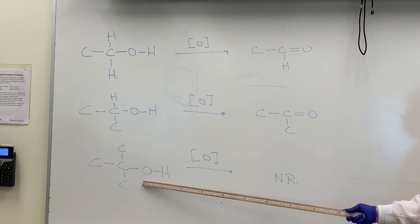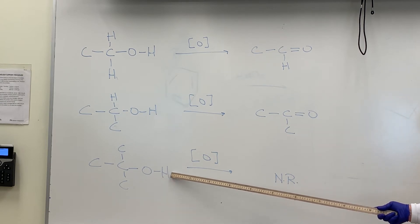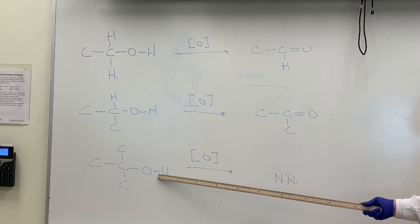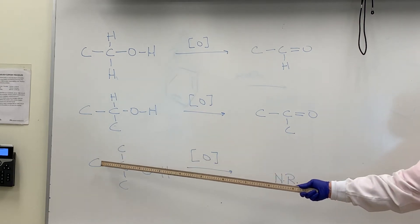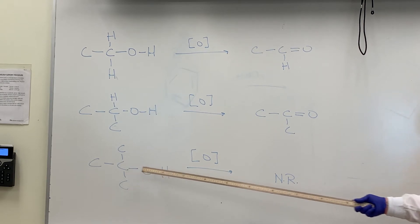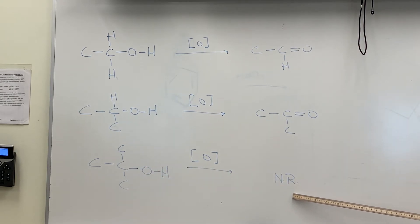If I have a tertiary alcohol, remember the first thing that has to happen is removal of two hydrogens. I'm going to take a hydrogen off the OH group, but notice there's no hydrogens bonded to the carbon of that tertiary alcohol. So therefore, NR stands for no reaction.